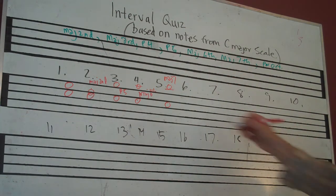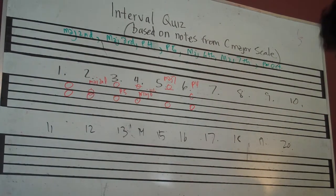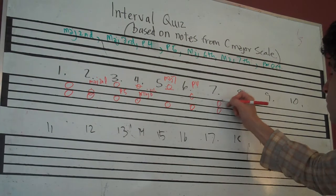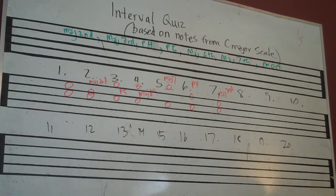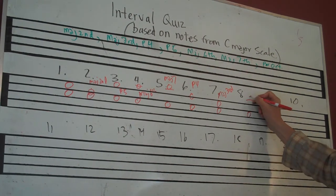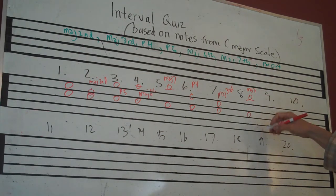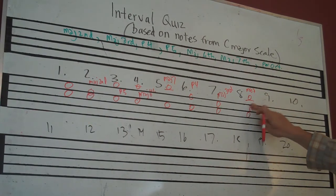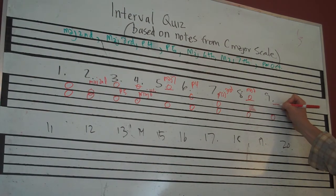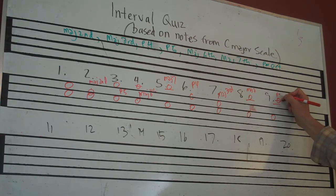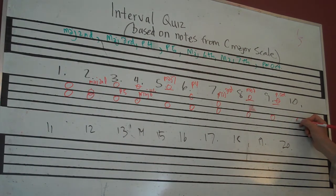Number 6 was a perfect fourth. Number 7 was a major third, C and E. Number 8 was another major seventh, C and B. Major seventh. Oh, I already wrote it up there. Number 9 was C and C. That was a perfect octave. Number 10, C and D, major second.